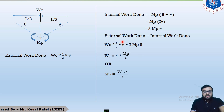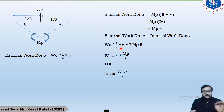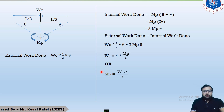Equating external work done and internal work done: WC·L·theta/2 = 2·MP·theta. Theta cancels from both sides. If the question asks for collapse load, make WC the subject; if it asks for plastic moment, make MP the subject. This is the end of Case 2.